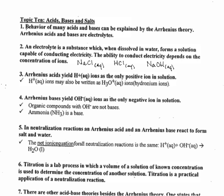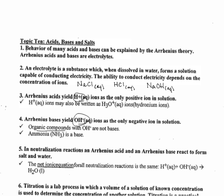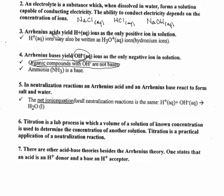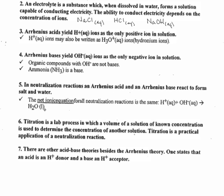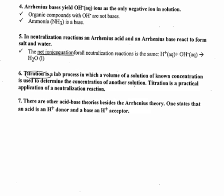Acids produce H+ ions and bases produce OH- ions. Importantly, organic compounds with OH groups are not bases — an alcohol is not a base. Neutralization: the H+ ions of the acid react with the OH- ions of the base to form water. Titration uses the formula from the back of the reference table: MAVA = MBVB. Remember, we add HA for the number of acidic H's in the formula, and OHB for the number of OH groups in the base formula.